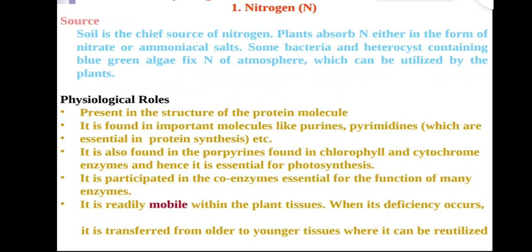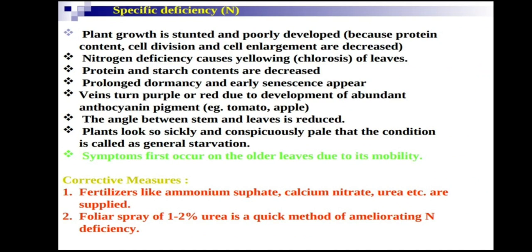Specific nitrogen deficiency symptoms include stunted and poorly developed plant growth because protein content, cell division, and cell enlargement are decreased. Nitrogen deficiency causes chlorosis — loss of chlorophyll — in leaves. Protein and starch contents are decreased, prolonged dormancy occurs in all plant parts, and early senescence appears. Veins turn purple and red due to development of anthocyanin pigment.